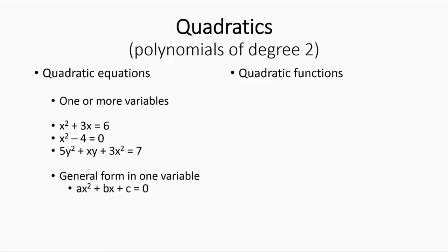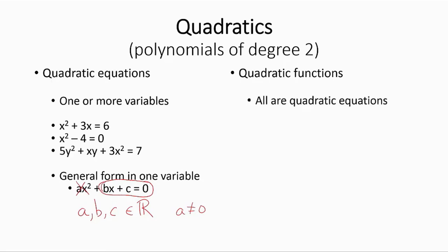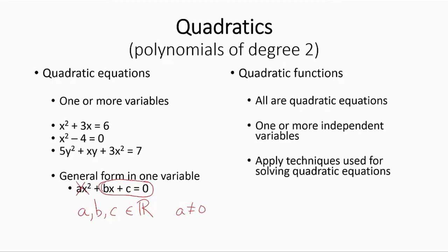Since rules can be expressed as equations, all functions are equations, but not all equations are functions. In the realm of quadratics — polynomials of degree 2 — quadratic equations may have one or more variables. The general form in one variable is ax squared plus bx plus c equals 0, where a, b, and c are real parameters with a different from 0. If a were 0, this term would collapse and it would be a linear equation provided b is different from 0.